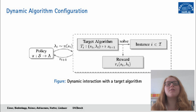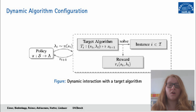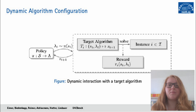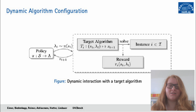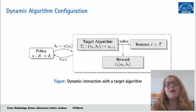In dynamic algorithm configuration, we aim to adapt a target algorithm's hyperparameters on the fly using a hyperparameter policy. This policy receives the target algorithm's current state and chooses a hyperparameter value for the next step. The target algorithm then executes that step and returns feedback as a reward and its updated internal state. This is what a DAC benchmark looks like, and zooming out we see how it interacts with the DAC solver.